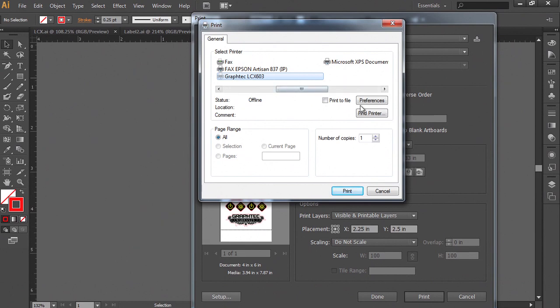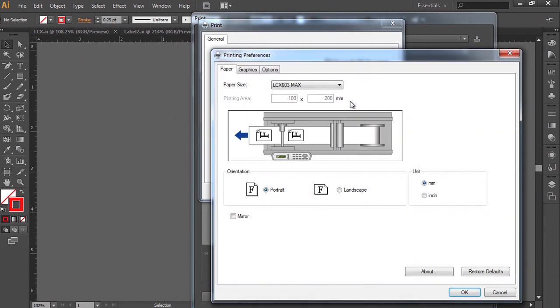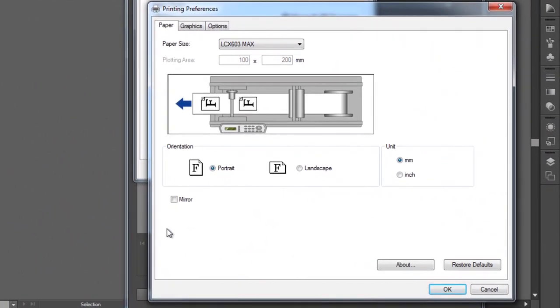Prior to processing the design, simply click on the preference button within the print window. It's here that you get an overall view of the device and the settings therein, such as its orientation and whether to mirror the job.